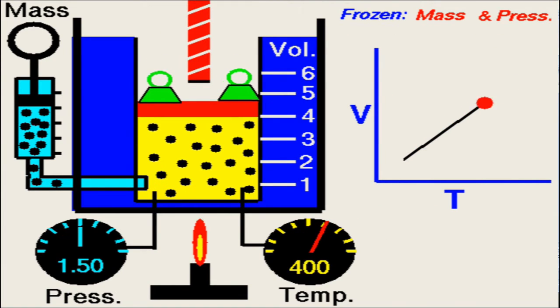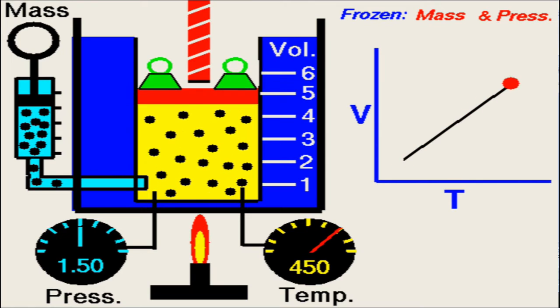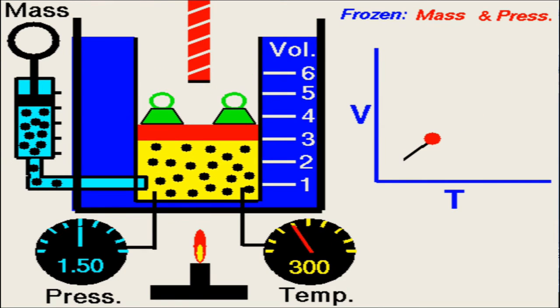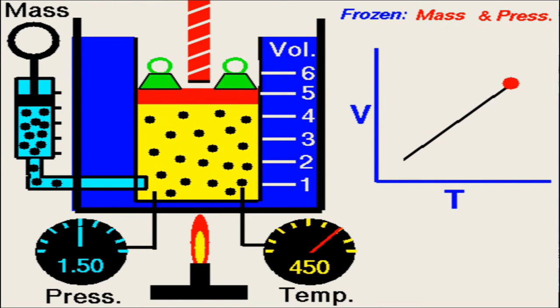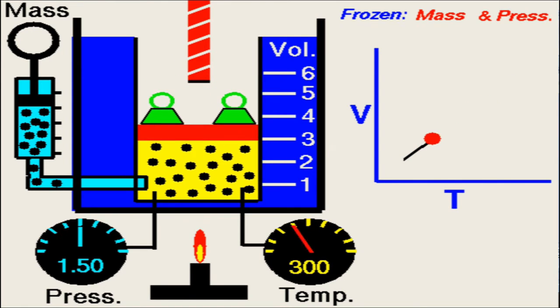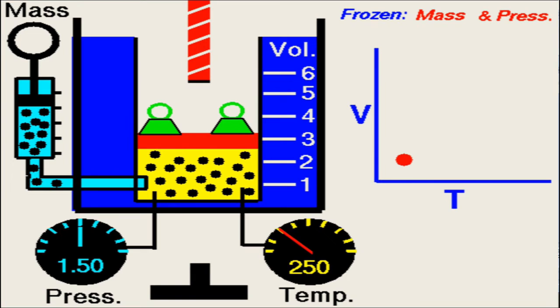By increasing temperature, volume of gas increases. The curve obtained between V and T is increasing. At constant pressure, the ratio of volume to temperature of gas is constant.